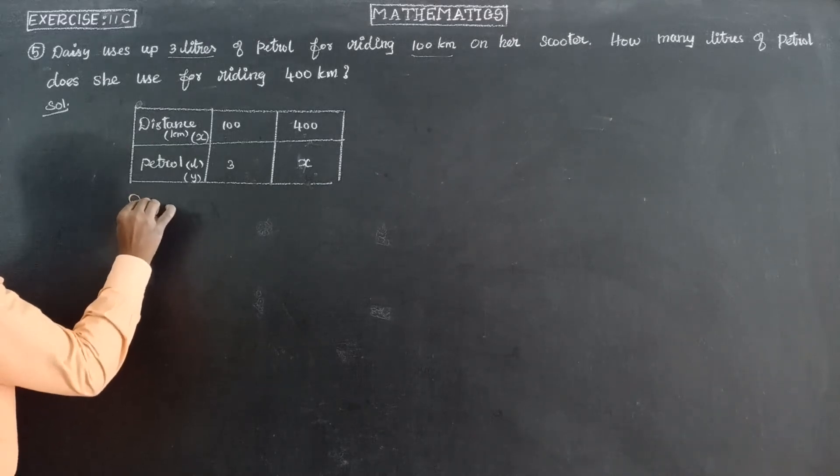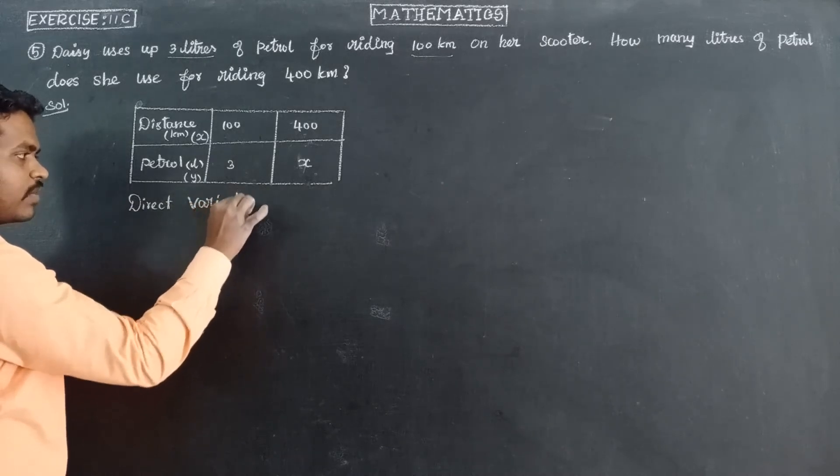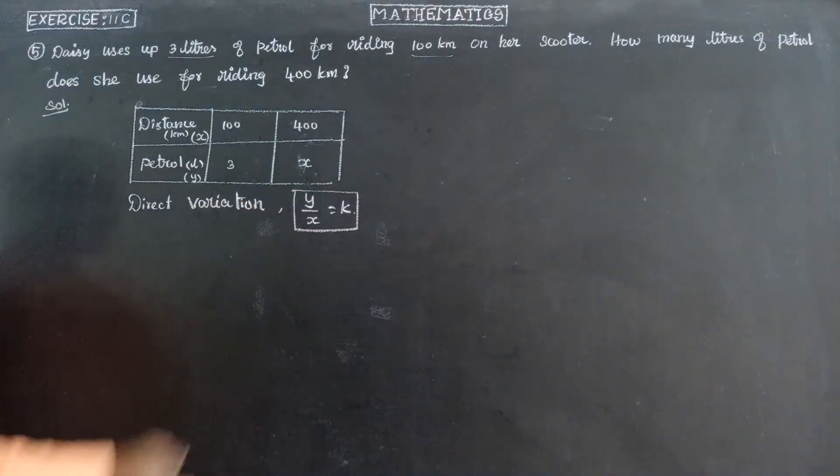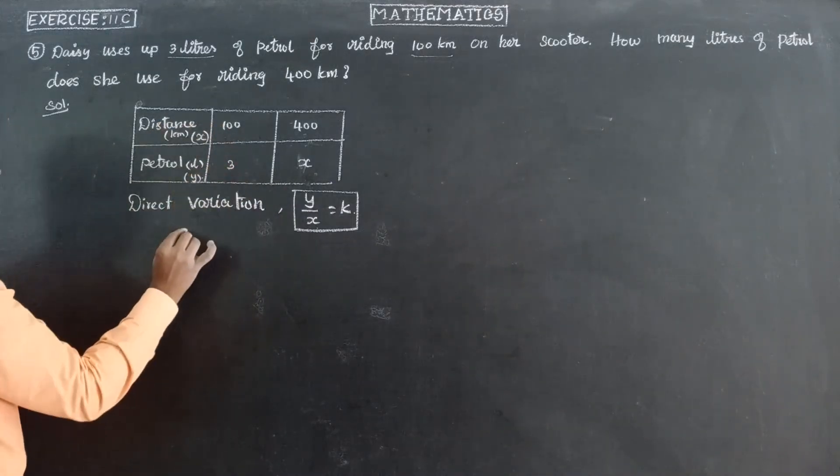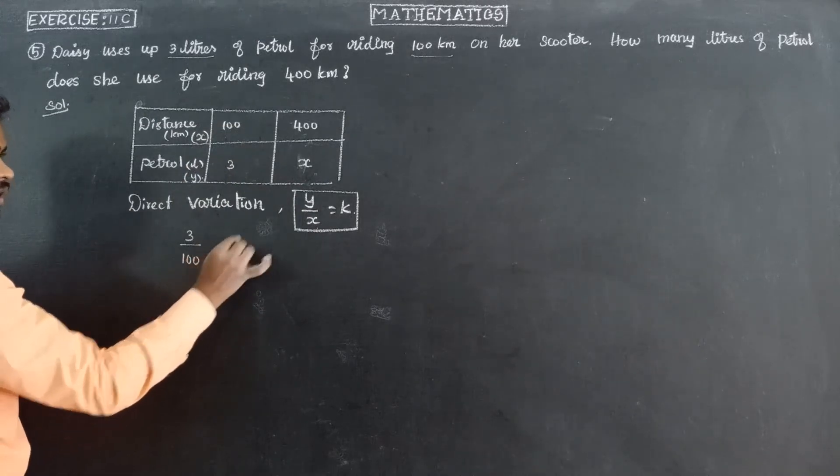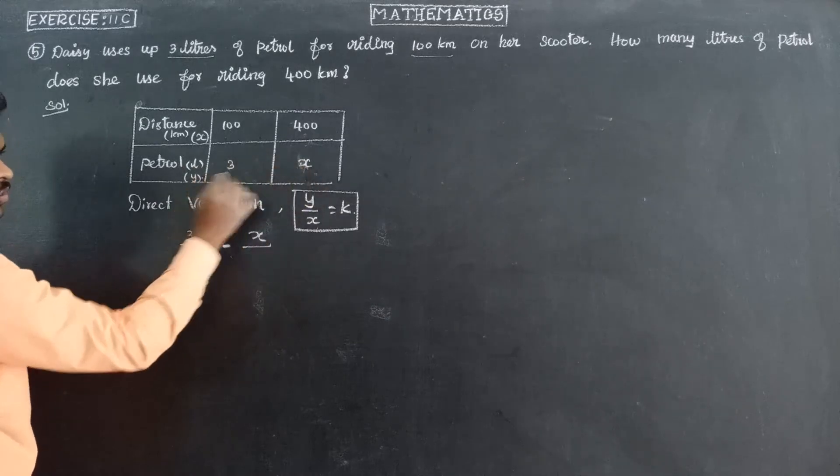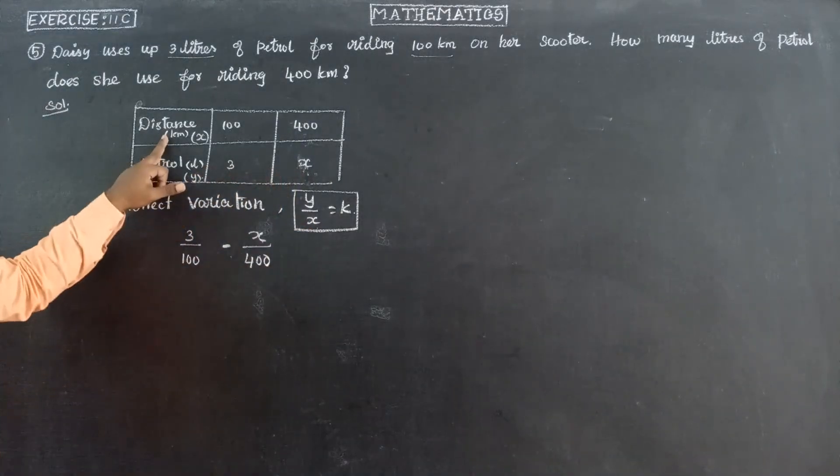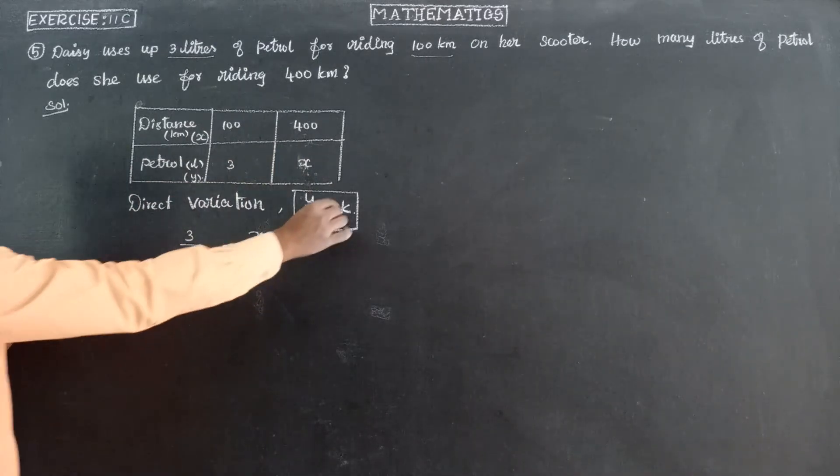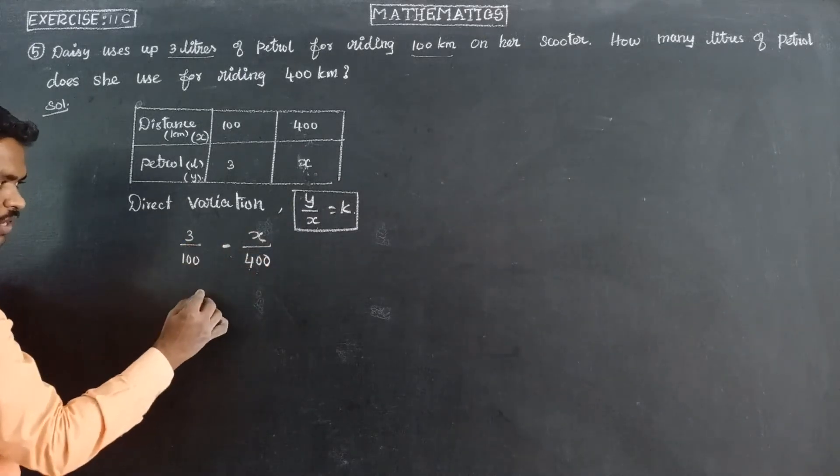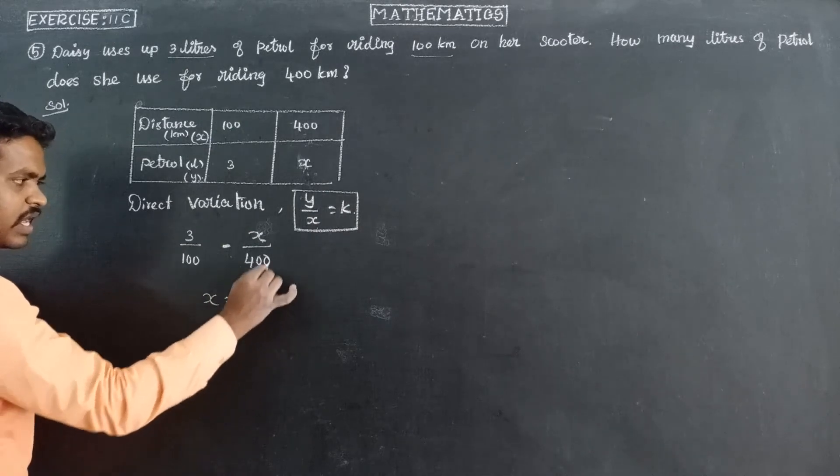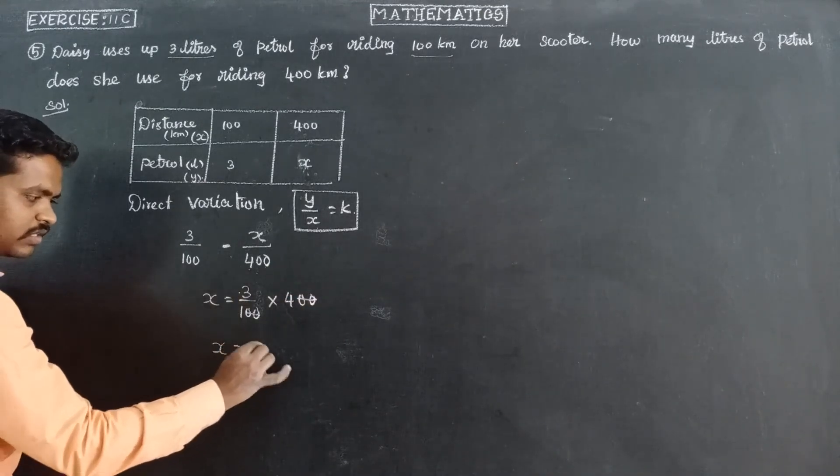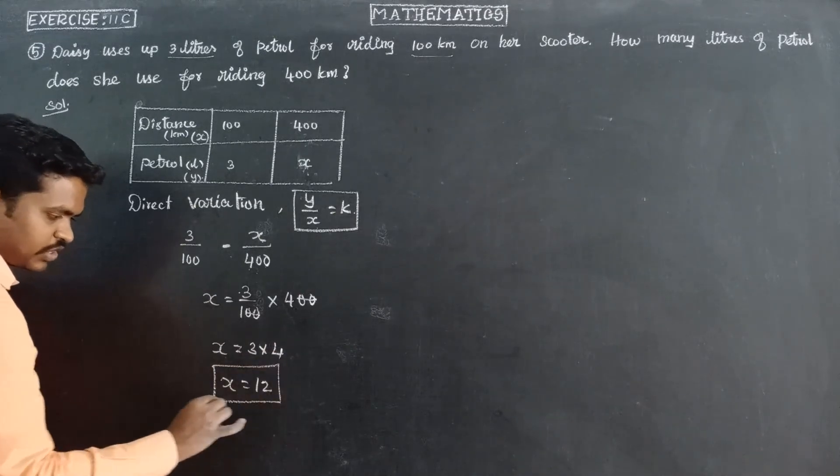Direct variation is the form y by x is equal to constant. So y by x, y first value 3, x value 100, is equal to y by x. So 3 by 100 is equal to x by 400. Divide and multiply. Cancel, 3 into 4 remaining. 3 into 4, 3 fours are 12. And this x is equal to 12. Therefore, 12 liters of petrol.